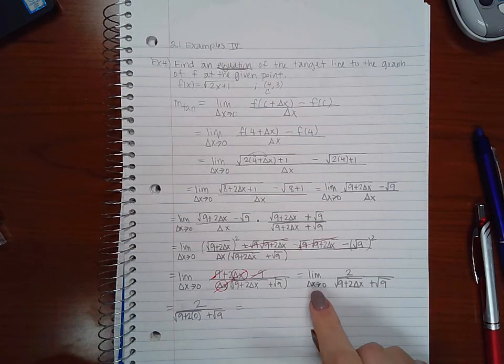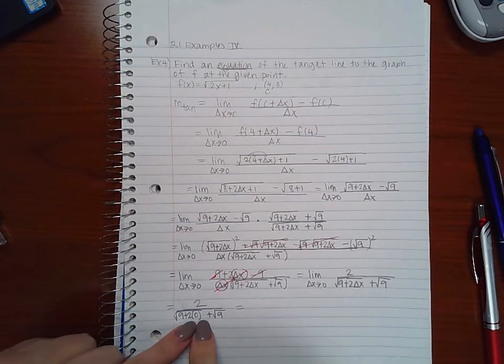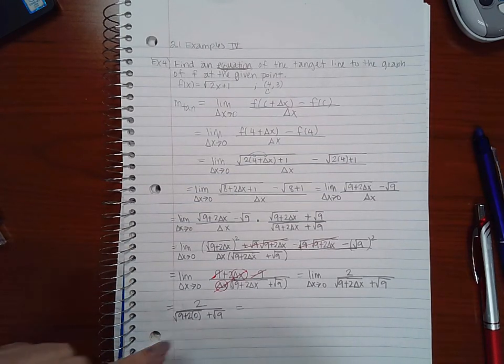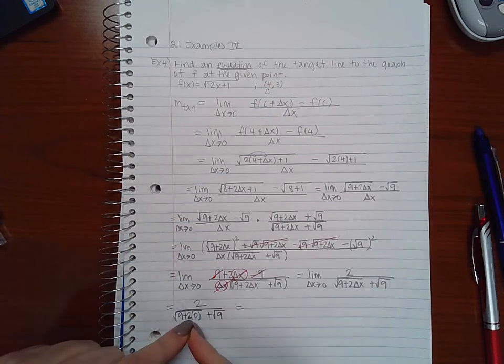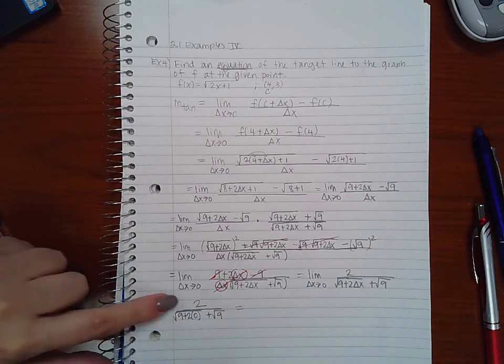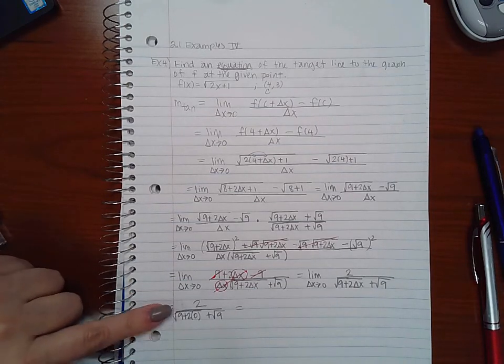If you're doing the direct substitution already, you should not be writing the word limit anymore because you're finding the limit. Now this is a reminder to tell you to take the limit, but once you've direct subbed, you no longer need a notation that tells you you need to take the limit - you're already taking it. So therefore you should not have that lim statement over here on the side.